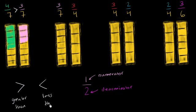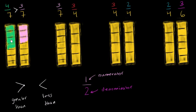The way I remember it is that either symbol's small pointy side is always on the side of the smaller number, and the big open side is always on the side of the larger number. So here, the big open side is opening towards 4 sevenths, and the small pointy side is pointing to 3 sevenths. 4 sevenths is greater than 3 sevenths.